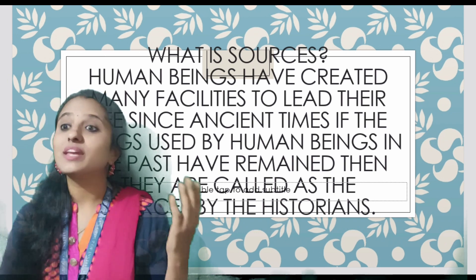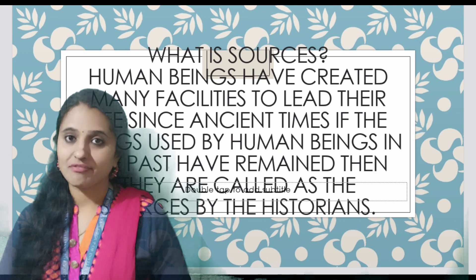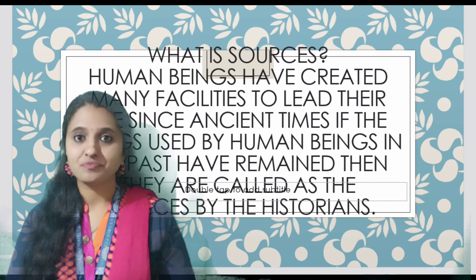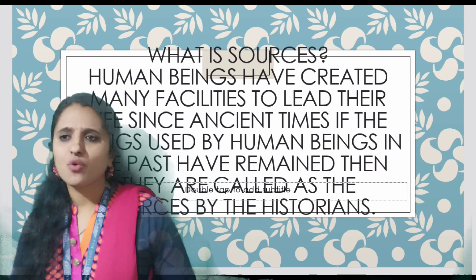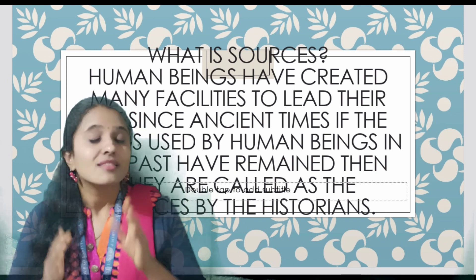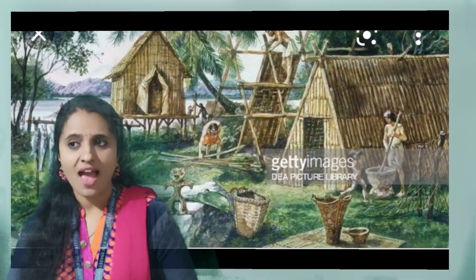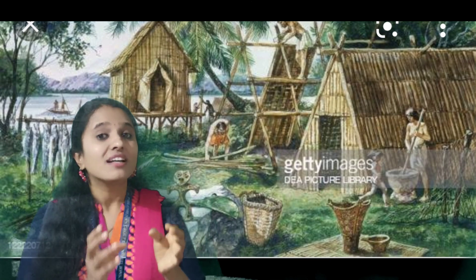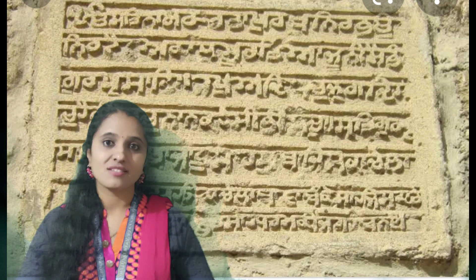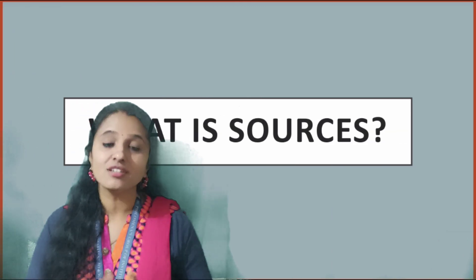Human beings have created many facilities to lead their life. For example, when you enter a home, you will find many facilities like a fridge, washing machine, TV, sofa, cart, and grinder. The same way, in olden days also, human beings had many facilities. If the things used by human beings in the past remain now, those are considered as sources by historians. For example, coins, monuments, and inscriptions are the biggest examples of sources.